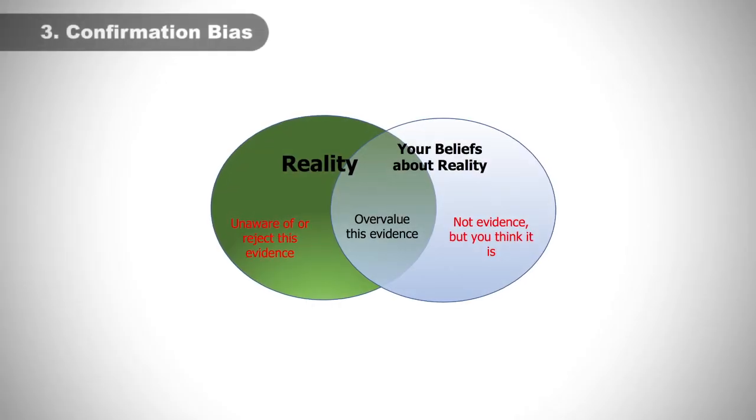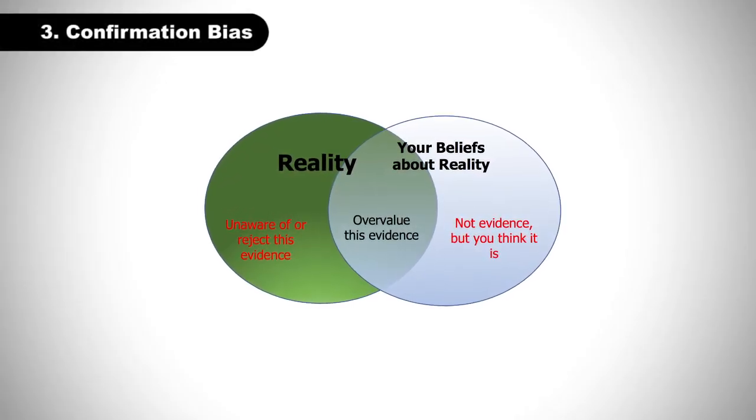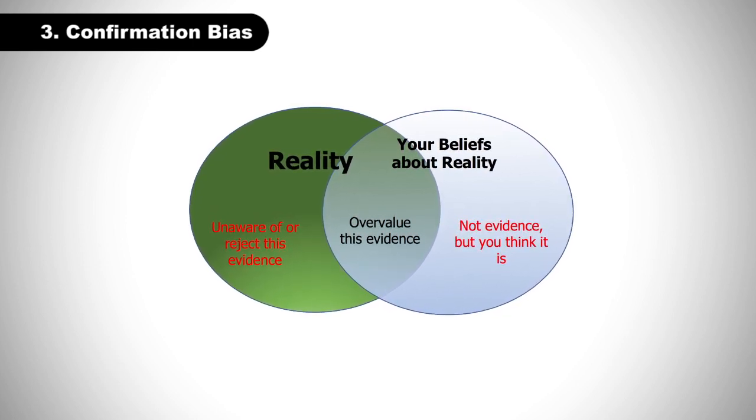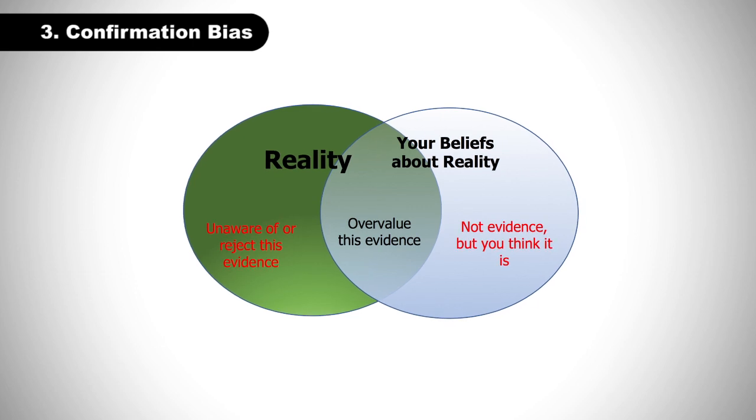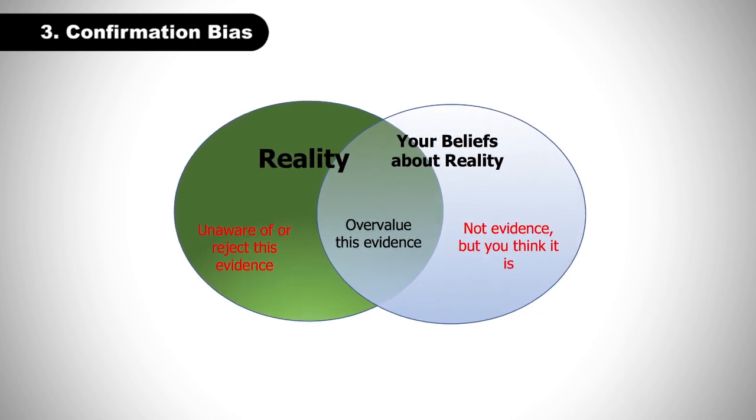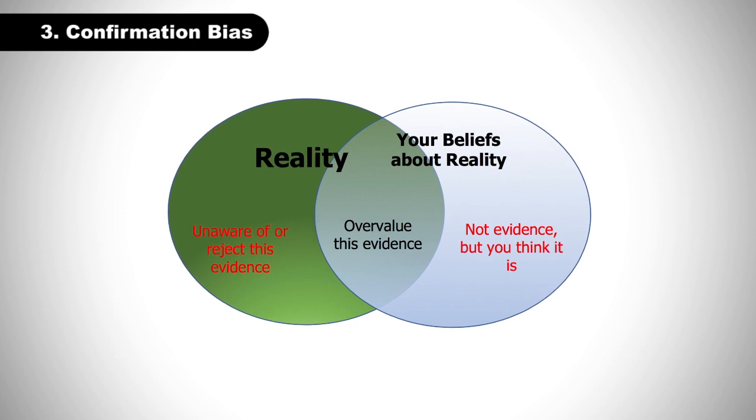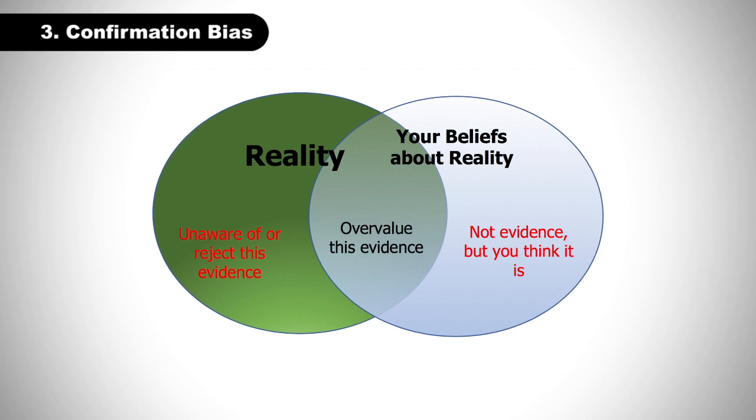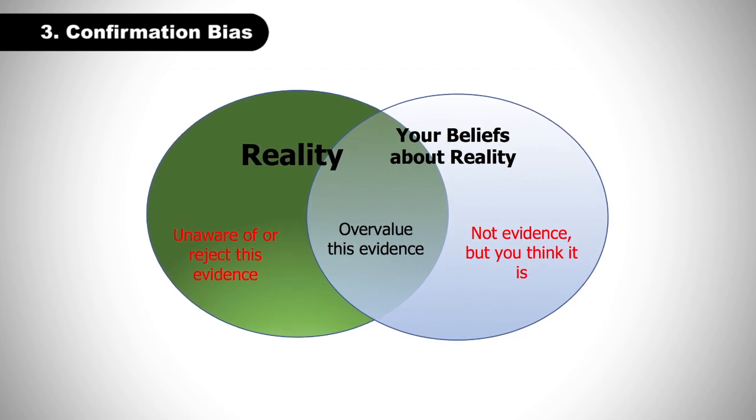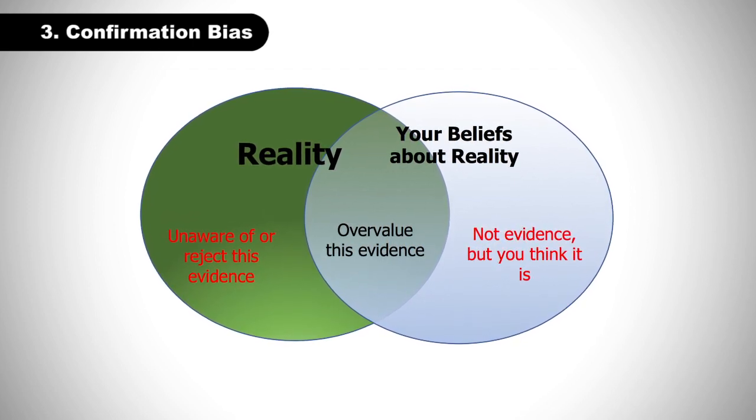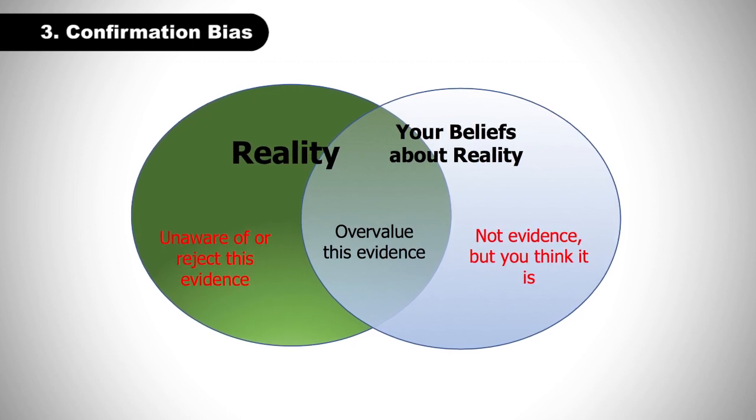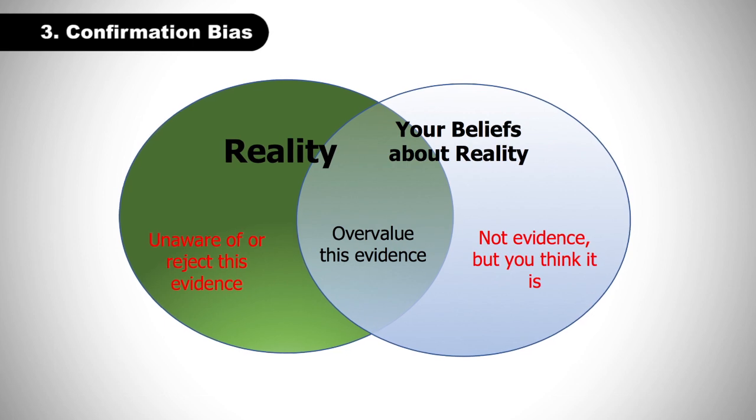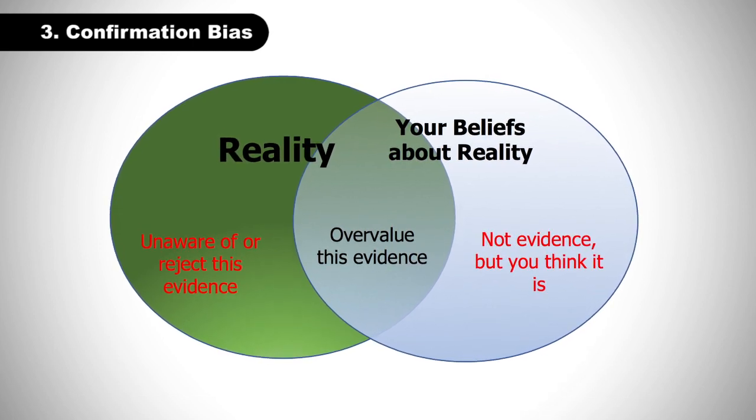Confirmation bias is one of the most common cognitive biases, which is when we seek to find information that confirms our prior beliefs and dismiss contrary information. This relates to conspiracy theories in a fairly obvious way. Those prone to conspiracy thinking will seek to validate their alternative explanations by typically only reviewing information sources that are supportive of their views, while either dismissing or ignoring contrary sources, or only reviewing contrary sources with the goal of refuting them.